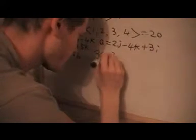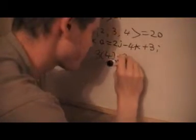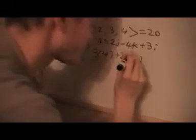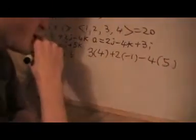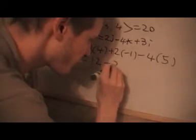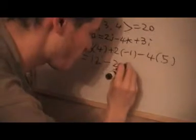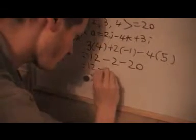So we get: the I components give us 3 times 4. Then the J ones, which is 2 and minus 1, give minus 2. And the K components give a minus and 5, which is minus 20. When we multiply, we've got 12 minus 2 minus 20.